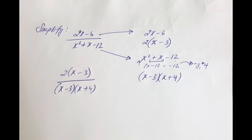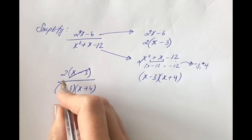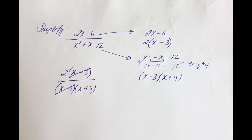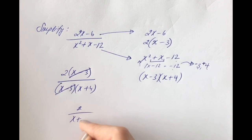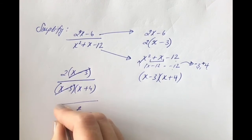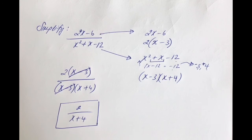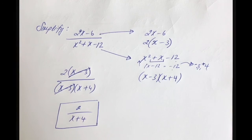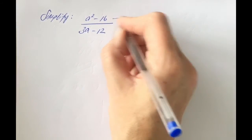Now I can cancel (x − 3) on top with (x − 3) on the bottom, since each is multiplied to everything on its respective side. This leaves 2 on top and (x + 4) on the bottom, giving a final answer of 2/(x + 4).